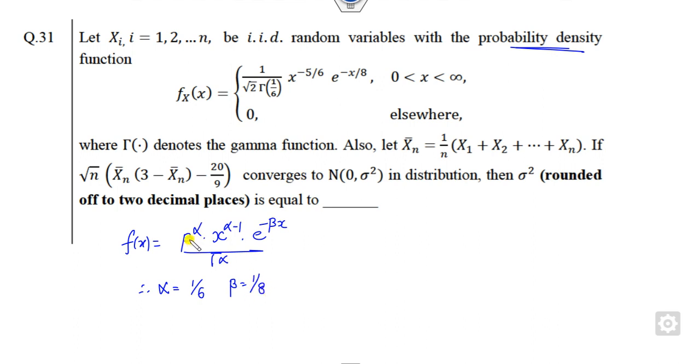The only thing is we have to check whether beta upon alpha is 1 by root 2. Beta is 1 by 8, alpha is 1 by 6, so I can write this as 1 by 2. So this follows the gamma distribution, so what is the mean of the gamma distribution?